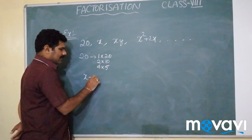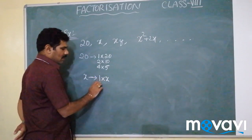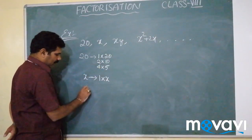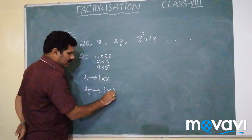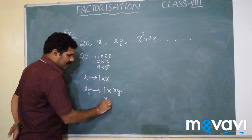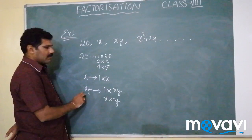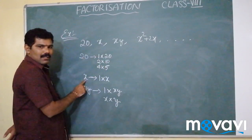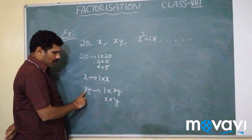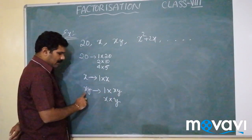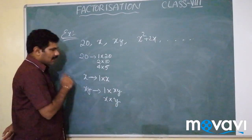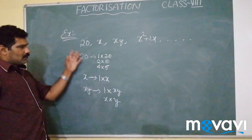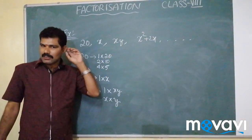If you take xy, we can write it as 1 × xy, since 1 xy equals xy, or as x × y, which also gives xy. Just like with 20 — 1 × 20, 2 × 10, 4 × 5 — for xy we can write 1 × xy or x × y. The same way we can write factors for different expressions. That is how to find factors and how to factorize an expression.